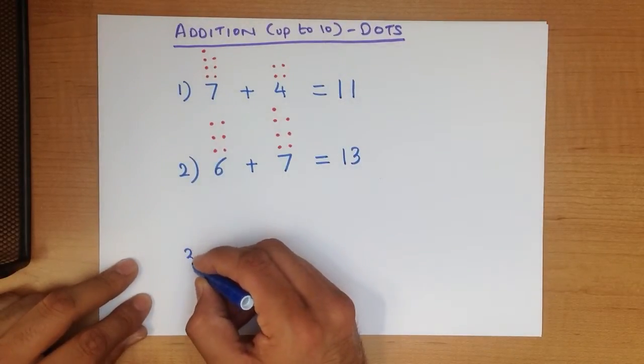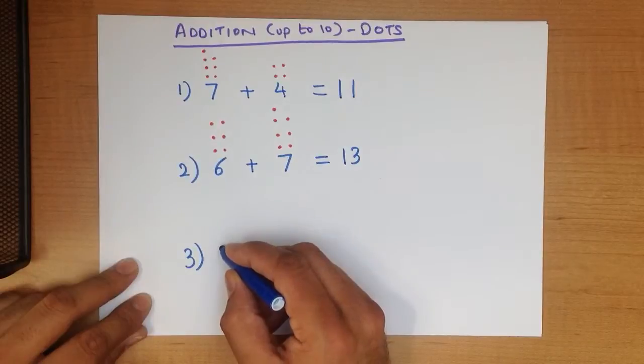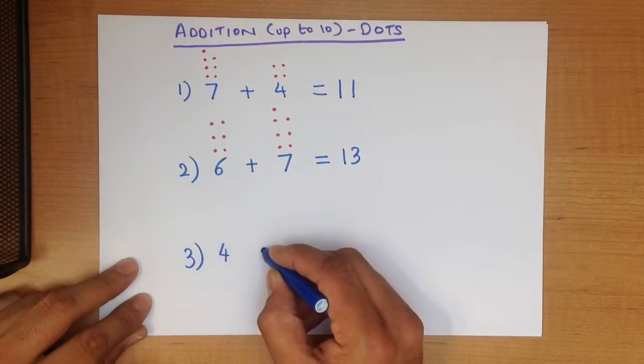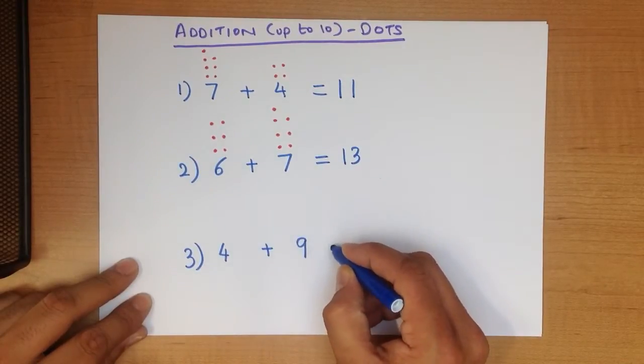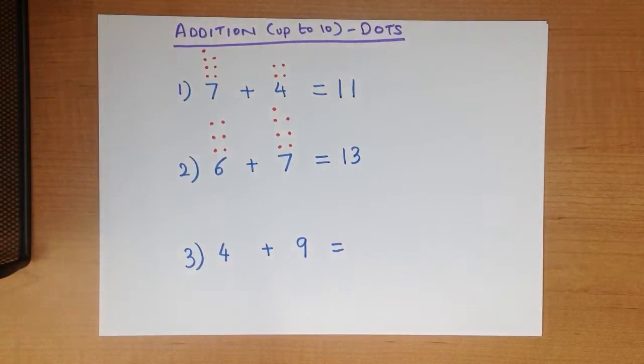Let's work through one final example. What is 4 plus 9? 4 plus 9.